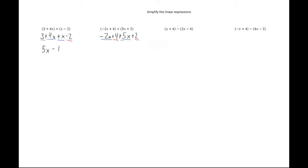5x minus 2x, or negative 2x plus 5x, is 3x. The commutative property allows us to move around the order in which we do these operations. For the constants we have 4 and 2. 4 plus 2 is 6, so 3x plus 6 is the reduced linear expression.